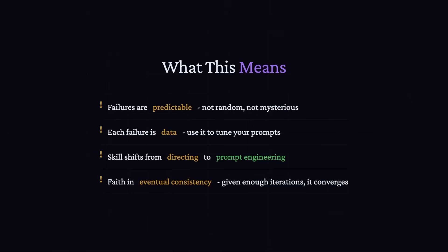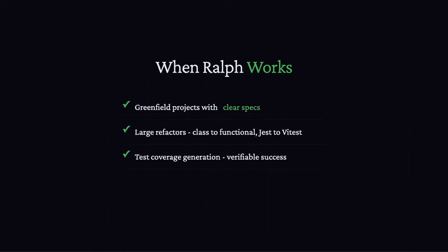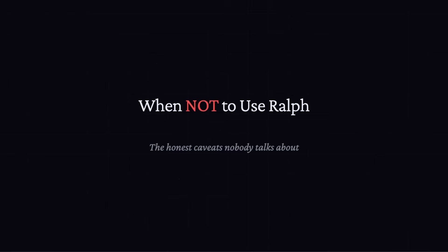Keep in mind it doesn't always work, and we'll look at where you should not use this. So when does this actually work? It's great for greenfield projects — you have specs, there's nothing to break, just let Rough iterate until it matches the specs. For big refactors, like converting class-based code to functional code or migrating from one tech stack to another — stuff that's repetitive and well-defined. Even test coverage: you can say 'write tests until you hit 80% coverage' — that's a measurable goal and Rough can iterate until it's done.